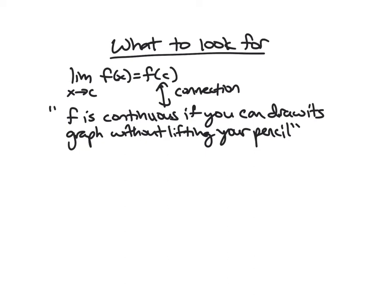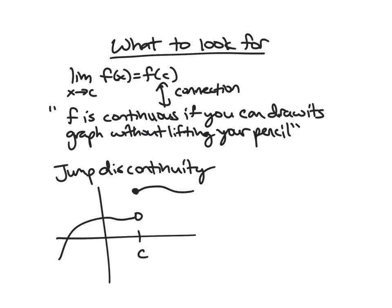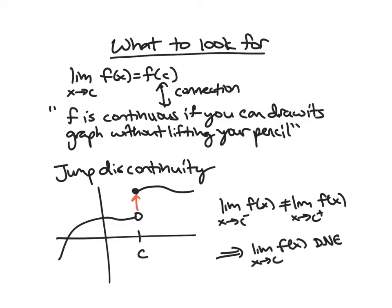So the first thing I want to look at would be things called a jump discontinuity. So here, it's exactly what it sounds like. So it's discontinuous, not continuous at that point, hence discontinuity. And it's a jump. We're jumping up there at c. And what is really going on? So how do we connect this to limits? So here, we would say that the limit as x approaches c from the left of f of x is not equal to the limit as x approaches c from the right of f of x. And we know that if our two one-sided limits don't agree, this implies that the limit as x approaches c of f of x does not exist.